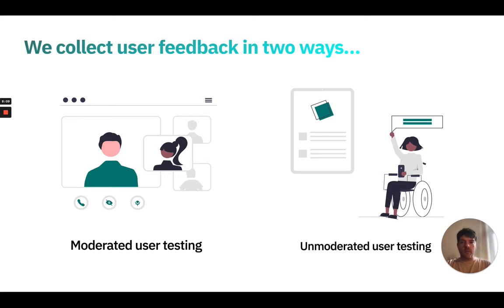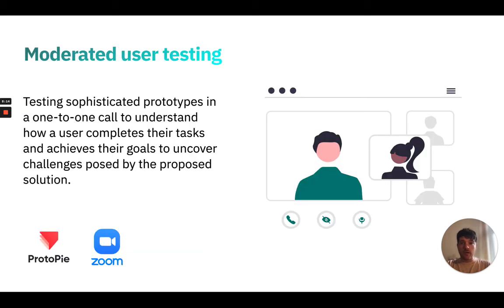We collect feedback from our users in a number of ways. The two main ones are moderated user testing and unmoderated user testing. Moderated testing is usually based on a designer and a user having a one-to-one call, testing sophisticated prototypes — most often we use a tool called Protopie, which creates real-feeling applications with feedback and validation. We then observe the user completing a series of tasks and goals to understand some of the challenges that our solution might have posed to them.